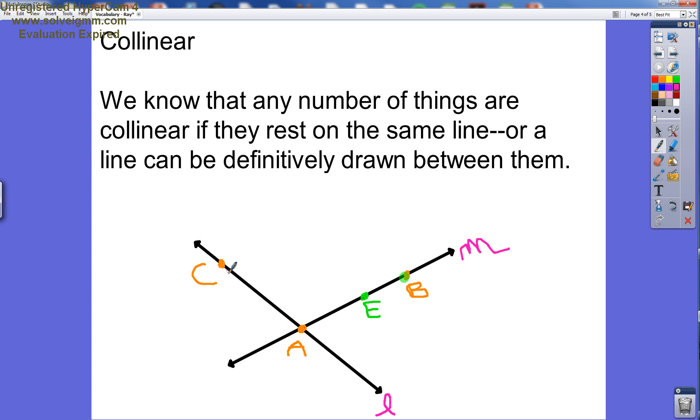But if we look at point C, point A, and then another point, point E, these three points are not on a line together.